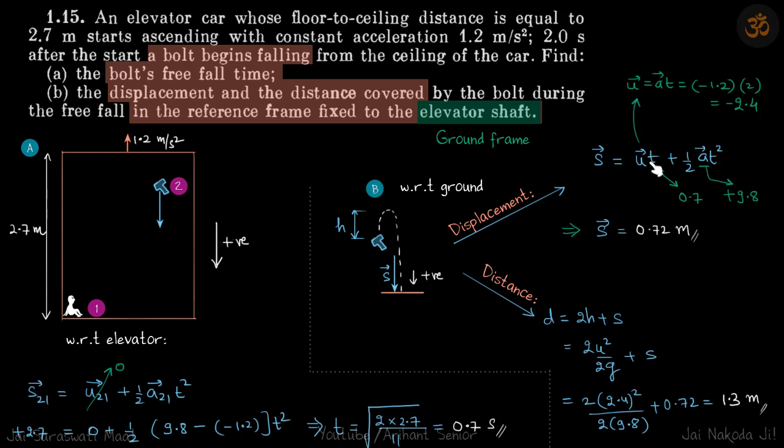We will put that in this equation, this numerical value. T is 0.7 seconds because irrespective of the reference frame, time is constant. Plus half at squared. Now in ground frame, acceleration is downwards which is positive in our frame. So it's plus 9.8 times t squared. If you put these numerical values here, we get the displacement as 0.72, which is positive. Because we have taken downward as positive, that means the bolt has fallen down with respect to ground.